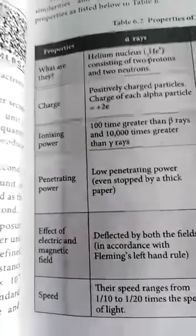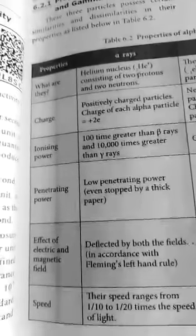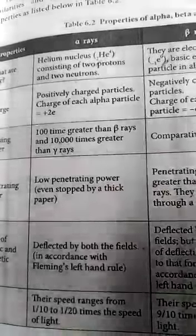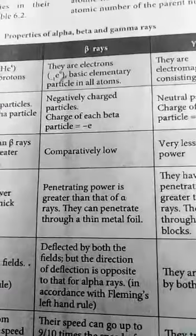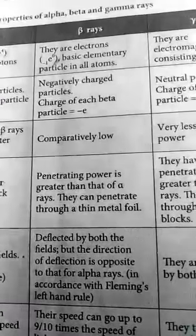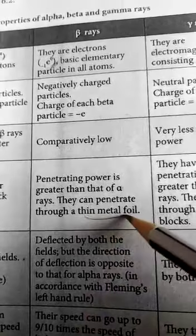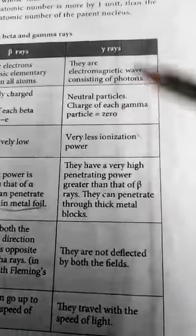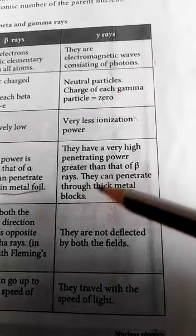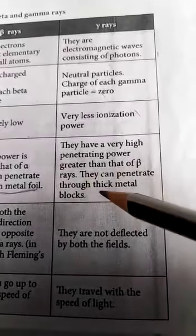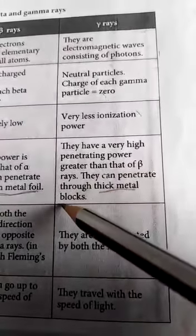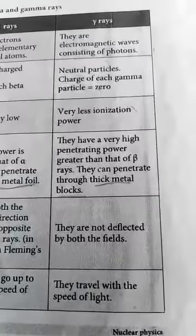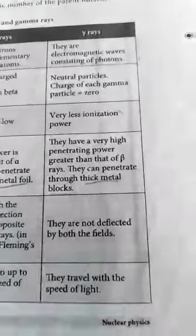Regarding penetrating power — the ability to go inside any material medium: alpha rays have low penetrating power and can be stopped even by thick paper. Beta rays have greater penetrating power than alpha rays and can penetrate through thin metal foil. Gamma rays have very high penetrating power, greater than beta rays, and can penetrate through thick metal blocks.